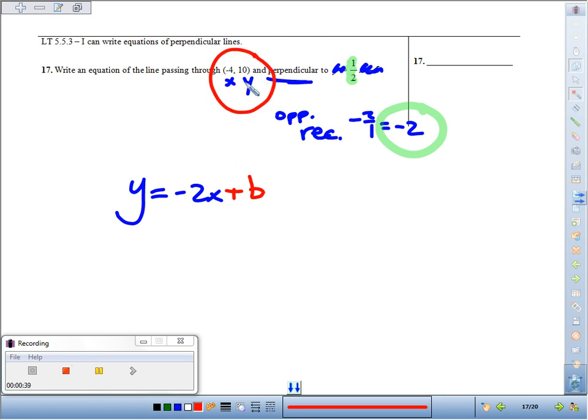When I substitute 10 for y and -4 for x, make this work to find the y-intercept. 10 = -2 times -4, which is 8, plus what? One step: subtract 8. We find out our y-intercept is 10 minus 8, or 2.